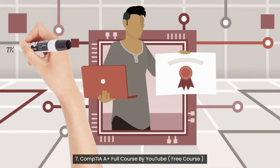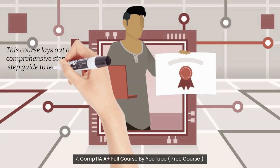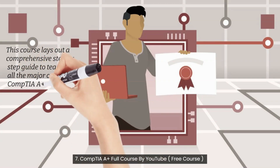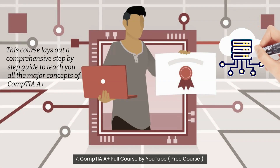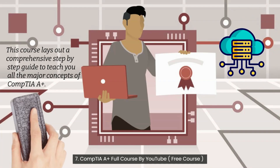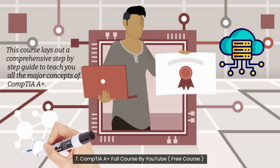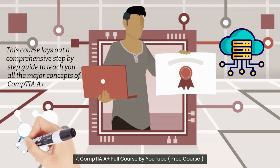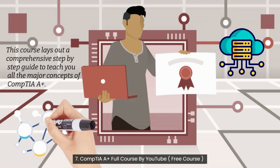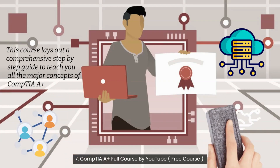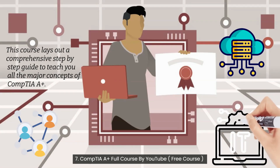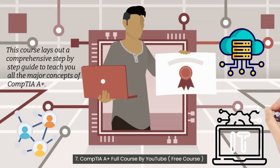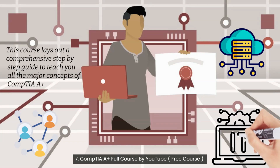Seventh Course: CompTIA A+ Full Course by YouTube. This course lays out a comprehensive step-by-step guide covering all major concepts of CompTIA A+. Topics include: motherboards, CPU, RAM, storage, power, chassis, building a computer, laptops, Windows, Windows configuration and maintenance, troubleshooting Windows, video card overview, audio sound card overview, custom PC, printers, networking, security, mobile devices, and technician professionalism. You will get an overview of all computer components, study file systems and disk management, learn OS optimization, understand troubleshooting tools, and gain knowledge of video and audio cards. The course is especially for students wanting a detailed account of CompTIA A+ for free. To enroll, click the link in the description box.